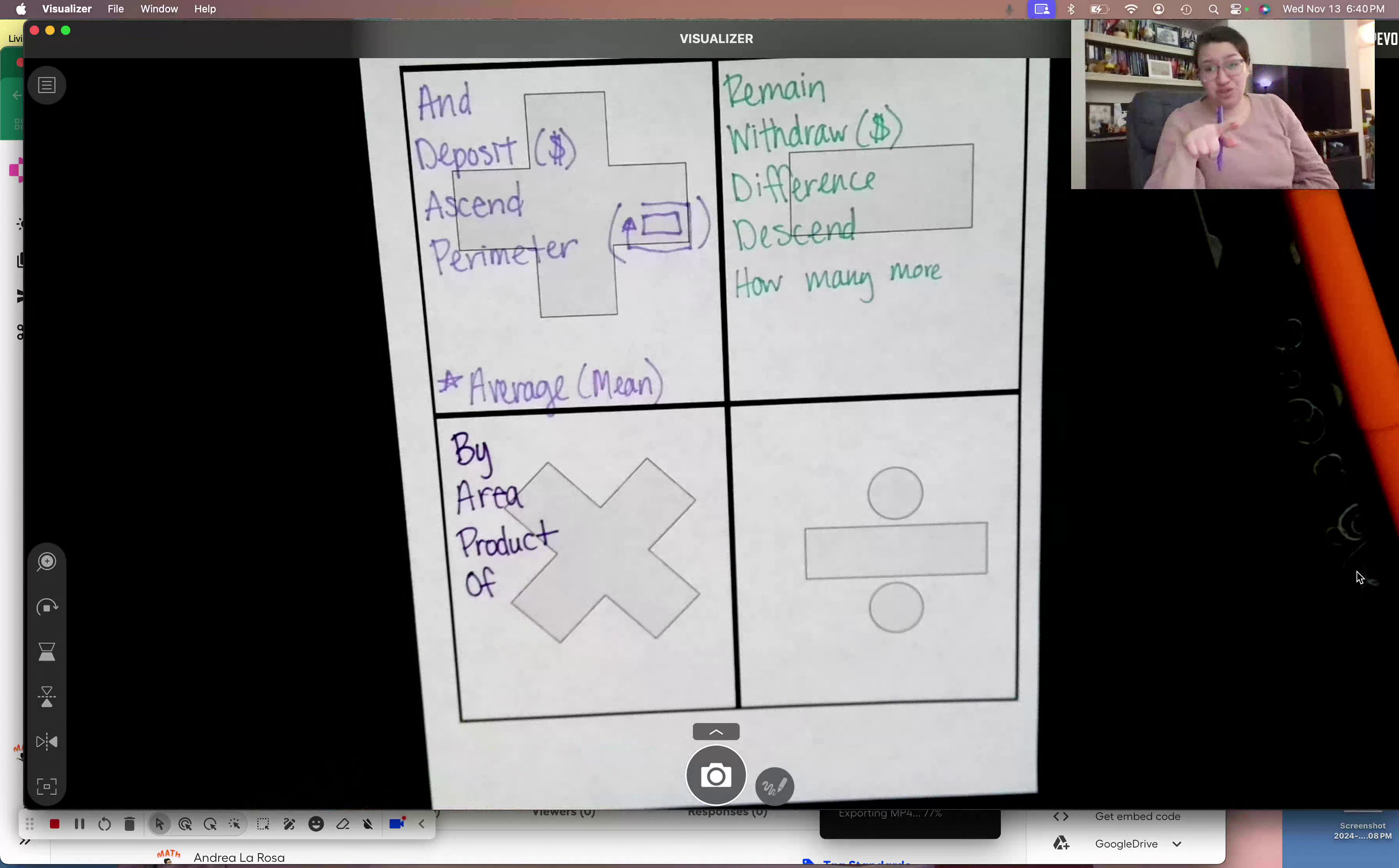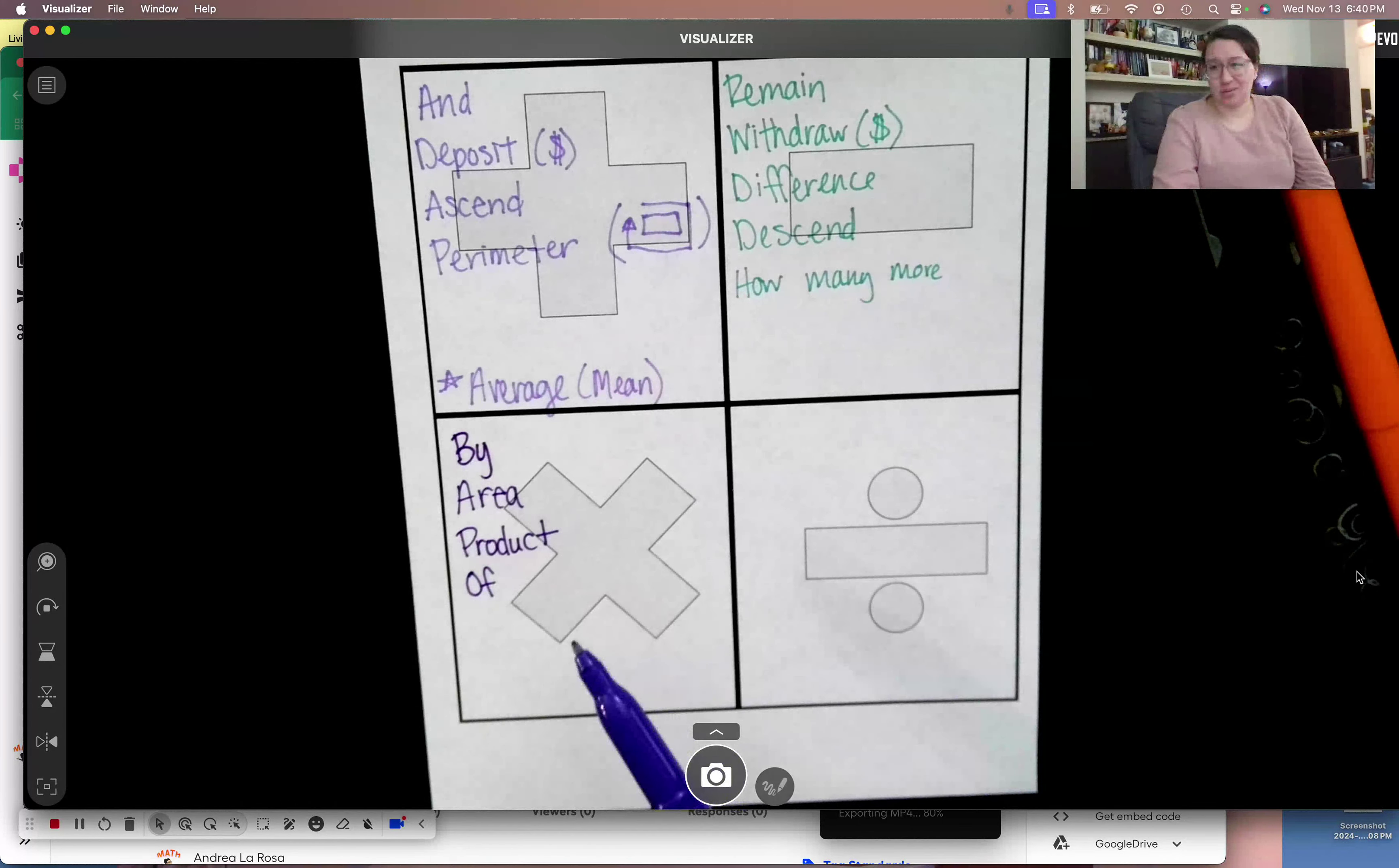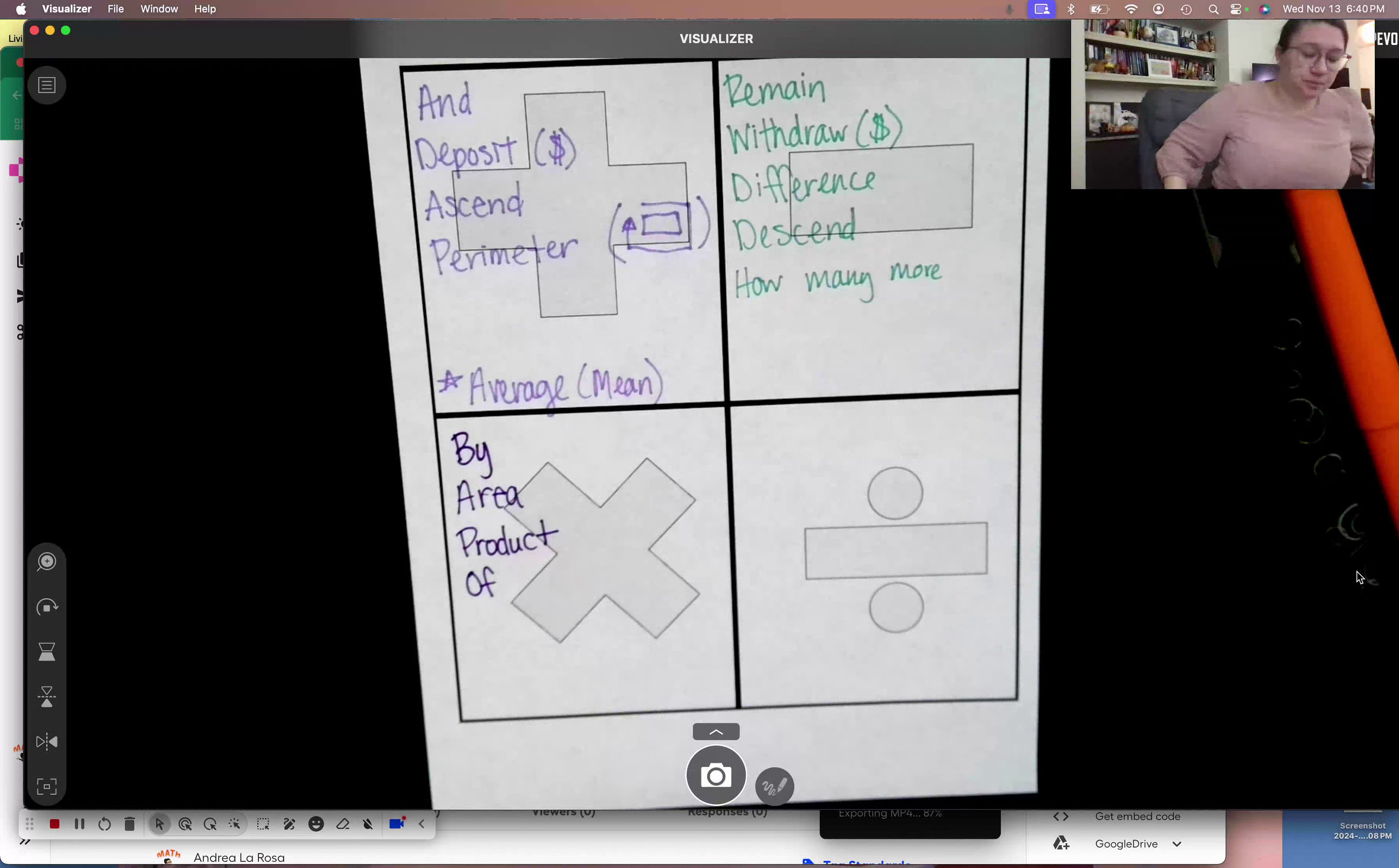And the word of, of is tricky because not every single of is important. Not every single of matters. So you really have to think about the context of the problem. If it says Miss La Rosa has a basket of three apples and she picks eight more, how many does she have? That basket of apples does not tell me to multiply. You really have to be careful with that word.